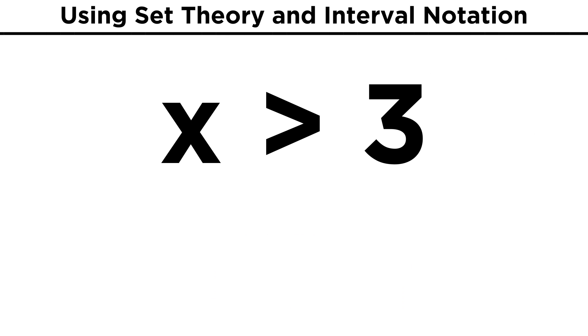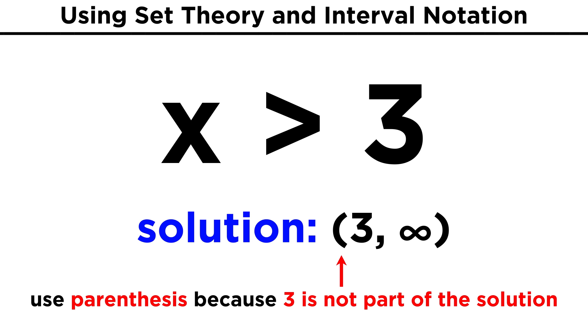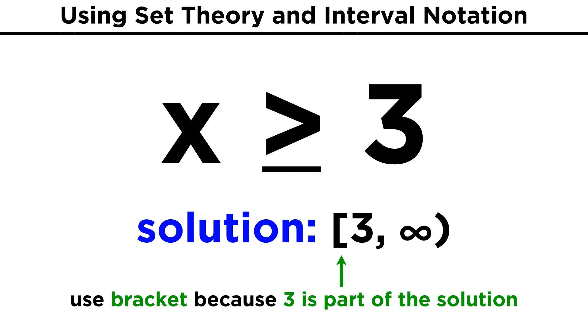We can use sets to express the solutions to inequalities. If X is greater than three, the solution is the set of all real numbers greater than three, which would be three comma infinity in parentheses. Since three is not included in the solution set, we use an open parenthesis to start. If it was X is greater than or equal to three, then three would be included in the solution set, and this would instead be an open bracket symbol, which implies inclusivity.